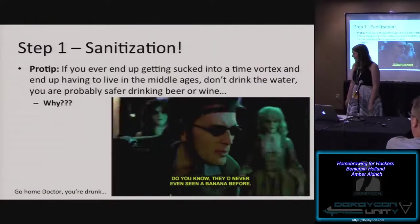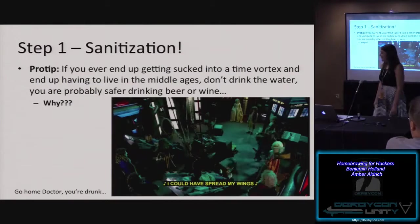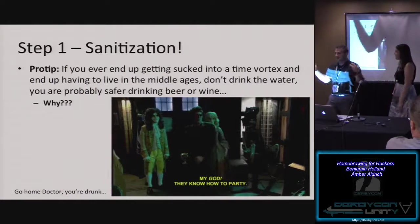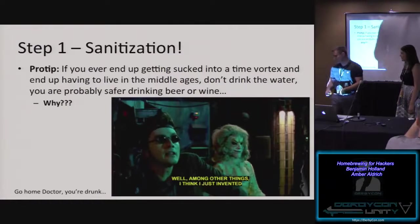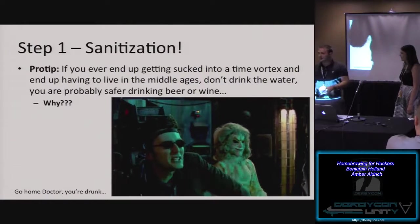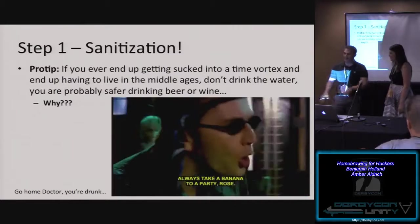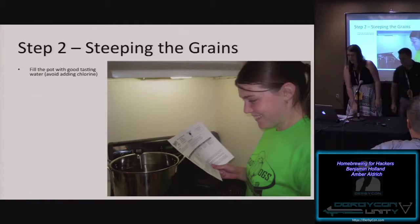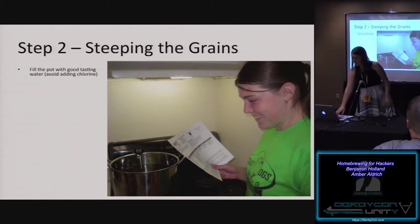When you give a DerbyCon talk you get a $200 honorarium, so we decided to give that back to the community and made these kits. These are all the proper ingredients and equipment you need for a one-gallon starter kit, including ingredients — everything you need is in there. Step two is to get the water hot and start the boiling process.